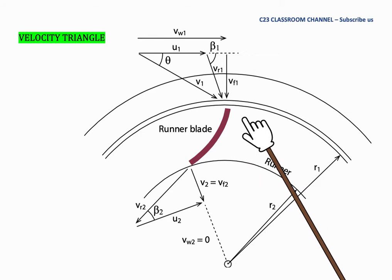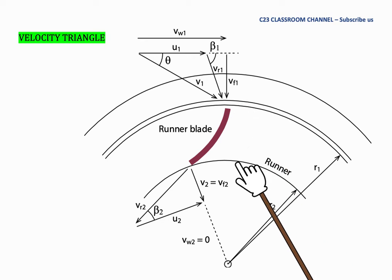If you see this diagram, you will find that the inlet of the Francis turbine is here. The outlet of the Francis turbine is here.